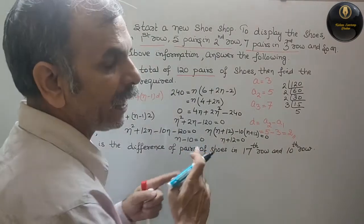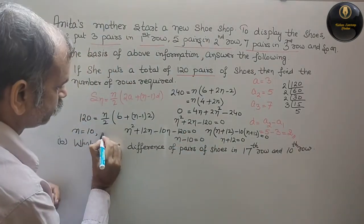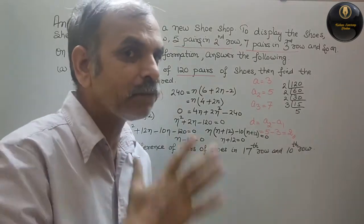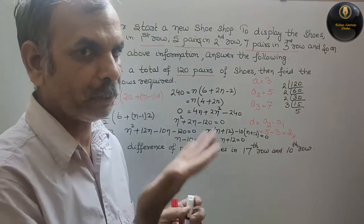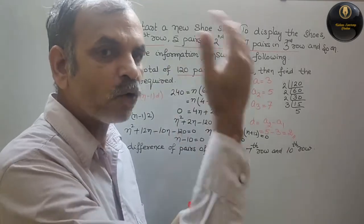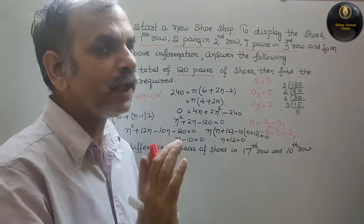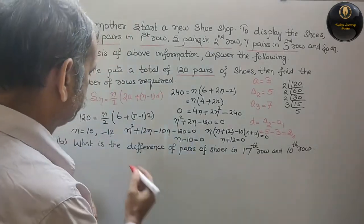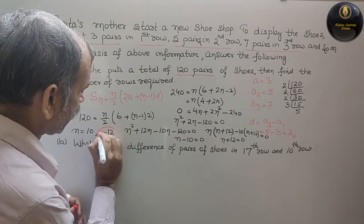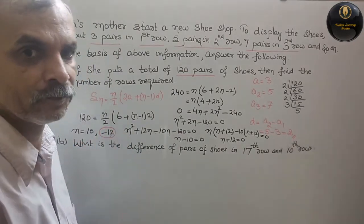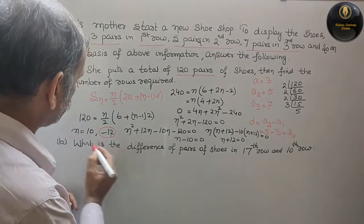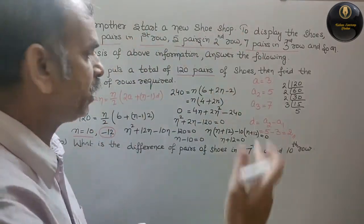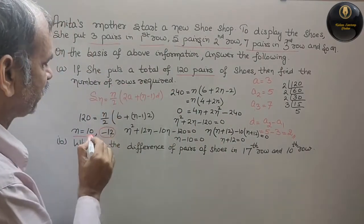The two values are n is equal to 10, and n is equal to minus 12. Since the number of rows cannot be negative, we ignore n equals minus 12. Therefore the correct answer is n is equal to 10. The number of rows required is 10.